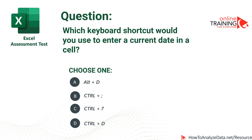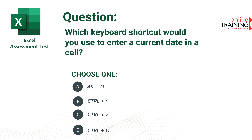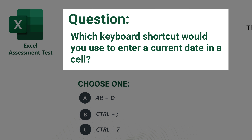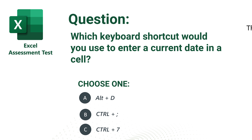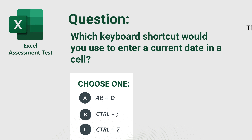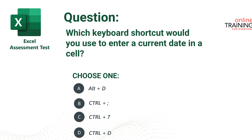Here is a tricky question to test your knowledge of Excel keyboard shortcuts, which is very frequently used as part of Excel assessment tests. Which keyboard shortcut would you use to enter the current date in a cell? You have four choices: Alt plus D, Ctrl plus semicolon, Ctrl plus 7, and Ctrl plus D.